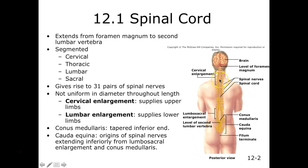Our spinal cord is segmented, which means it has different regions. The neck region would all be cervical, then the area in our thorax would be called the thoracic. We have our lumbar region and then also our sacral region.